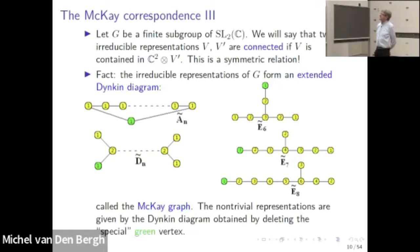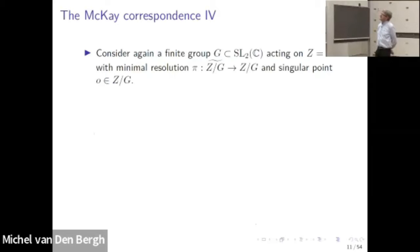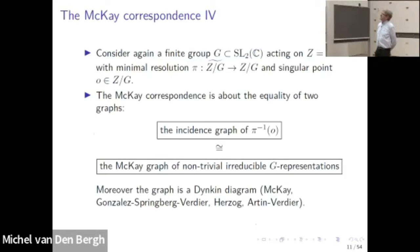I've listed the extended Dynkin diagrams with the dimensions of the irreducible representations written on the vertices. There is a green vertex where the number is one, corresponding to the trivial representation — the one-dimensional vector space on which the group acts trivially. If I remove this trivial representation, what's left is an ordinary Dynkin diagram. One version of the McKay correspondence says that the two graphs we constructed — the incidence graph of the exceptional locus and the McKay graph of the non-trivial irreducible representations — are the same graph, and moreover this graph is a Dynkin diagram.